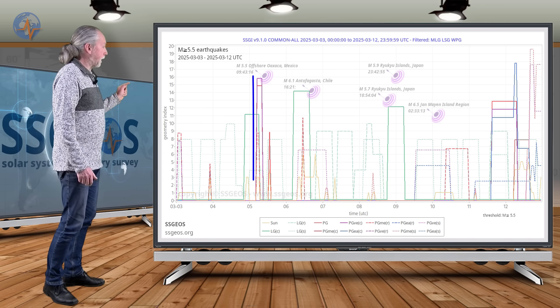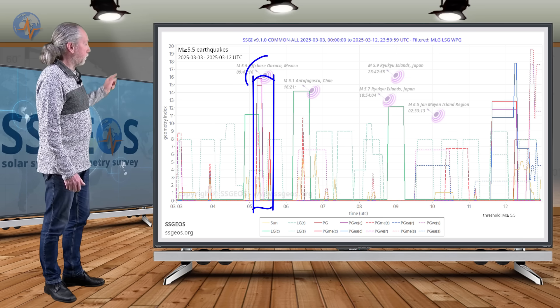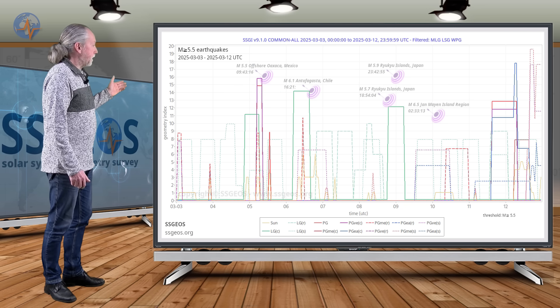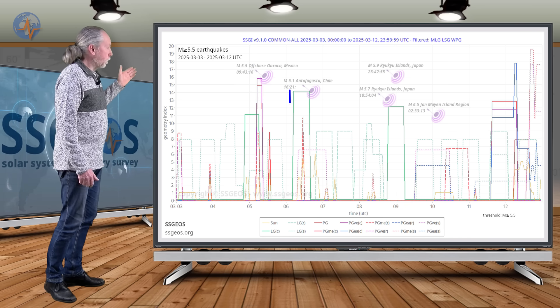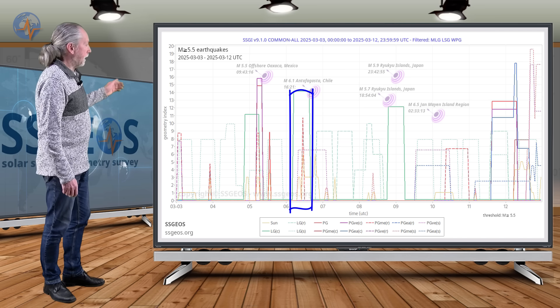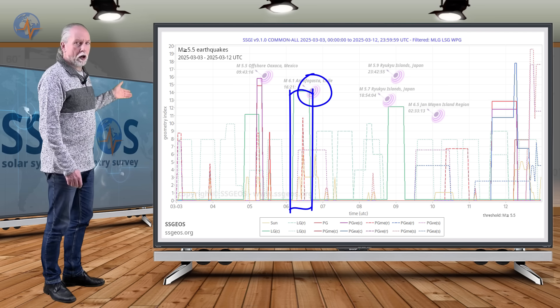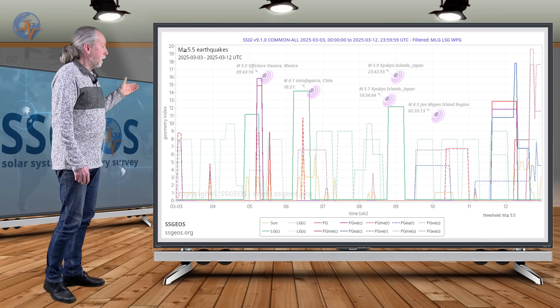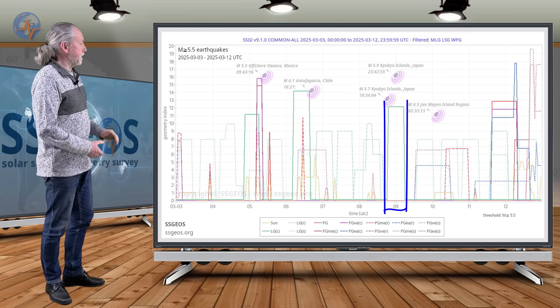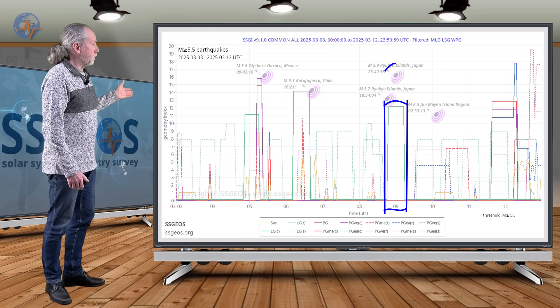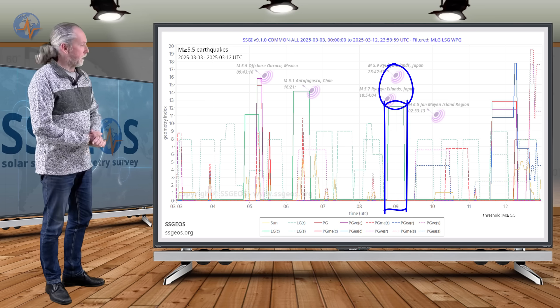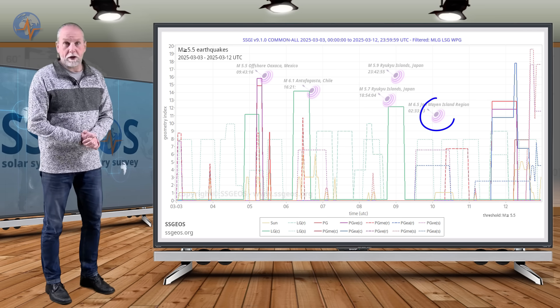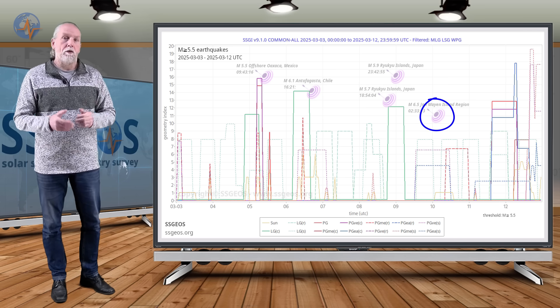We had a convergence of planetary geometry on the 5th and we see a 5.5 magnitude earthquake there in Mexico. Then we had the lunar conjunction on the 6th with Jupiter, and we see a 6.1 just after that lunar conjunction occurred in Antarctica, Chile. Then we go to the next lunar conjunction with Mars and we see some seismic response there at the Ryukyu Islands, 5.7, 5.9. And just this morning, a 6.5 in the Jan Mayan Islands region that's north of Iceland.